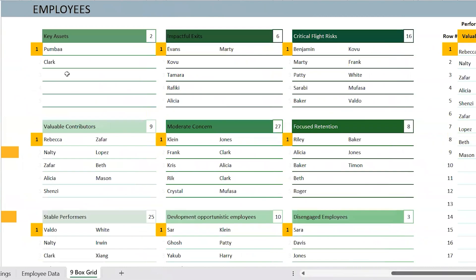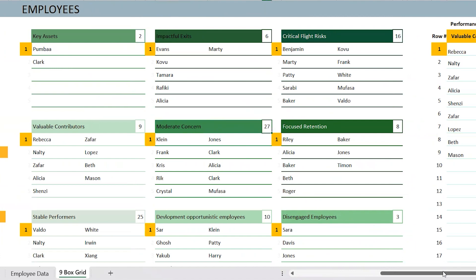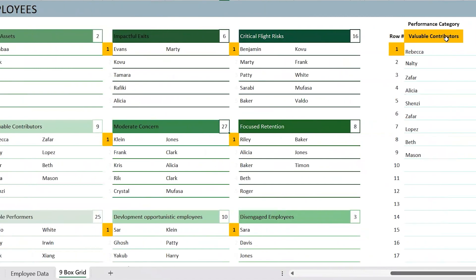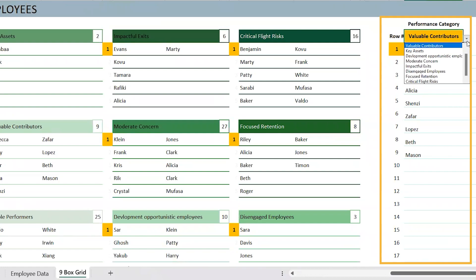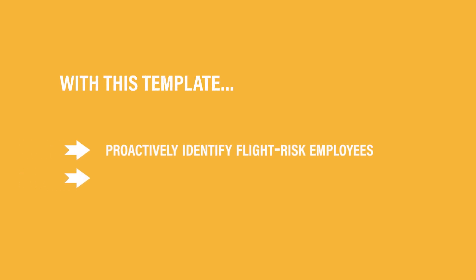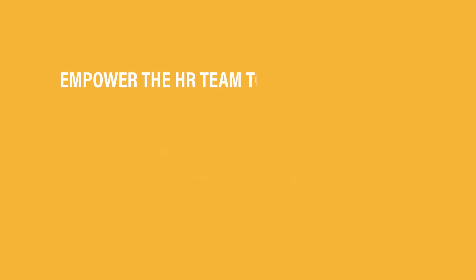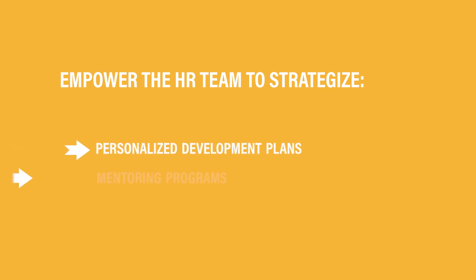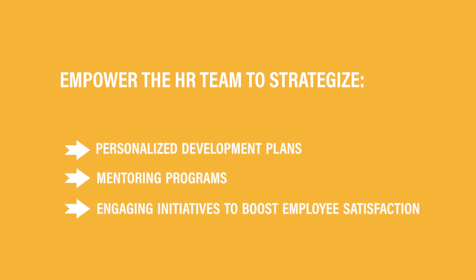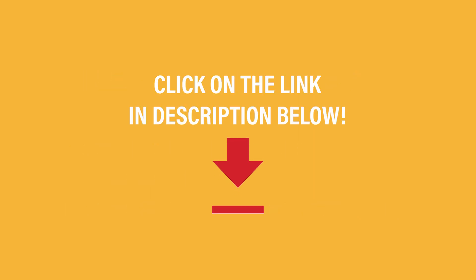This visual allows you to see employee names and the count in each of the grids. If you need to get a list of employees under one grid, use the drop-down here for the same. With this template, proactively identify flight risk employees and take appropriate actions to improve retention. Empower your HR team to implement targeted strategies such as personalized development plans, mentoring programs, or engaging initiatives to boost employee satisfaction based on the insights from the flight risk matrix.